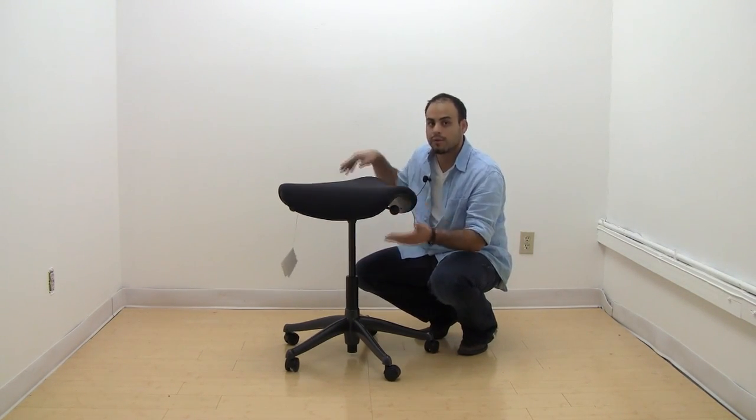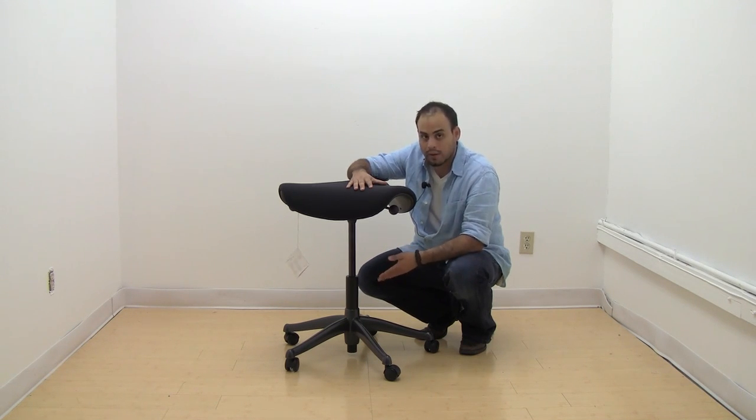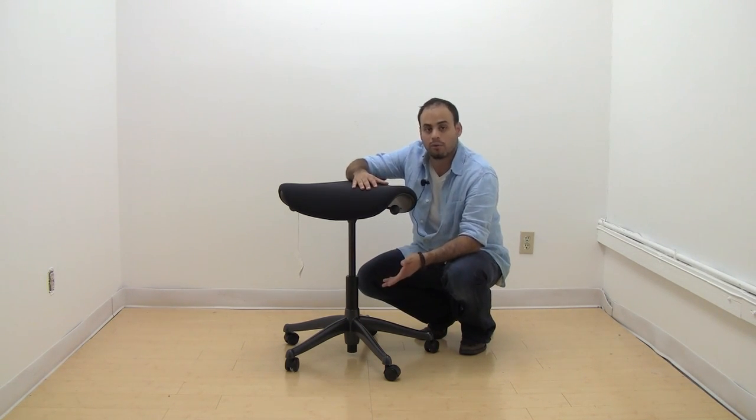Some of the options of the chair that come basic is it's really easy to use. You have height adjustment. It's pretty much going to be the only option you can get as far as function-wise on the product. There's another model available which is a drafting stool height, which you can get a foot ring on, goes up higher for workstations that are higher than normal desks.